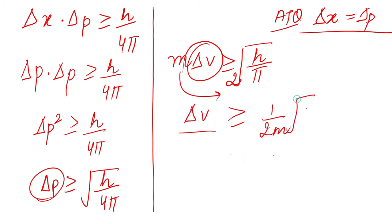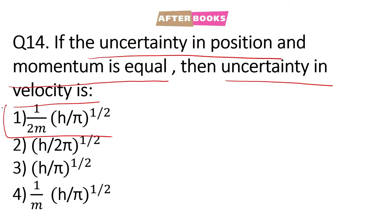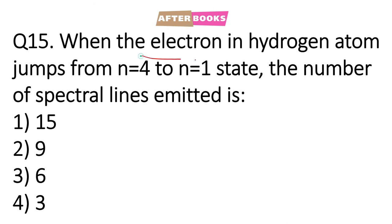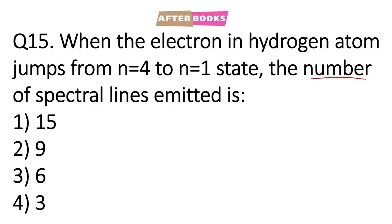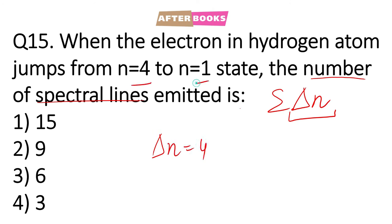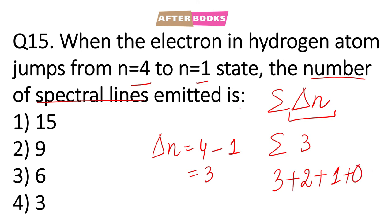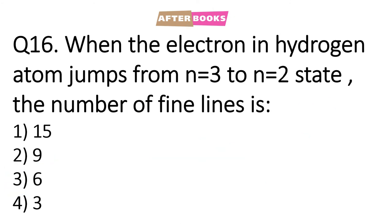Question number 15: When an electron in a hydrogen atom moves from n = 4 to n = 1, how many spectral lines are produced? The formula is summation of Δn, where Δn is the difference of the two levels. Here Δn = 4 − 1 = 3. So summation = 3 + 2 + 1 = 6. That is option number 3.